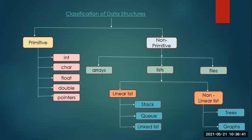A student answered: primitive data type stores only a single value, like a = 10. Correct — and for non-primitives, we can take arrays, which can take many values in a single variable. So primitive data structures are used to represent single values. In C programming, int, char, float, double — when you write int a = 2, a can hold only that one value. You can't write int a = 2, 4 — that is not possible. A can store only one value at a given point of time.